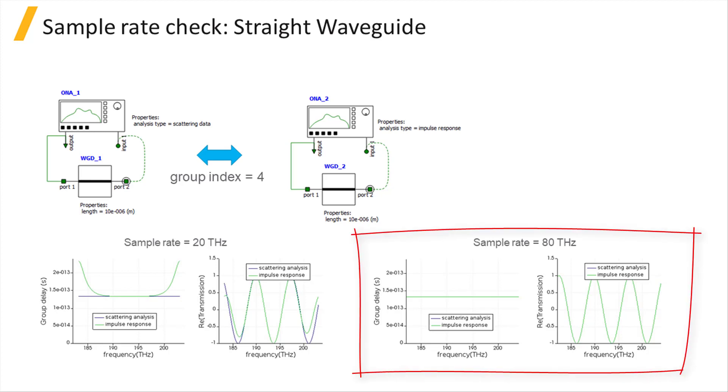The two rightmost plots show the results when the sample rate is increased to 80 Terahertz. Now the frequency range over which the Time Domain simulations are accurate is much larger.